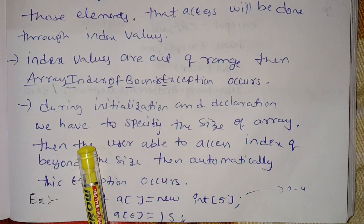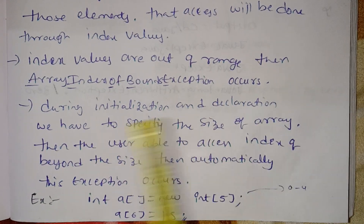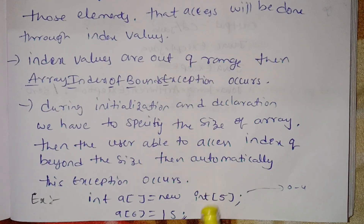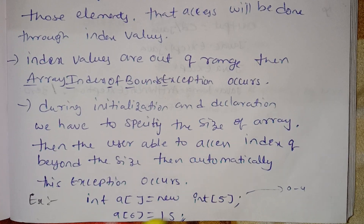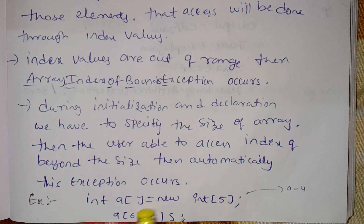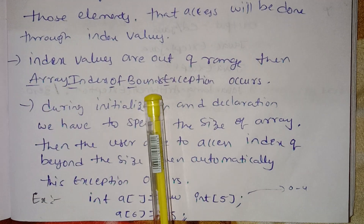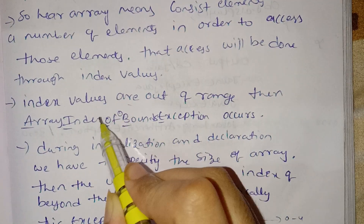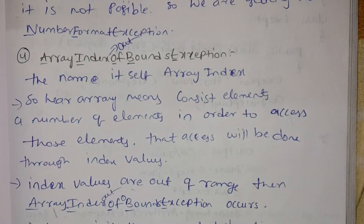The ArrayIndexOutOfBoundsException occurs when the user tries to access an index beyond the size of the array. For example, if the array size is 5, valid indexes are 0 to 4. If we try to access index 6 or 7, the exception is raised — array index out of bounds. So if we add 6, the value 6 is out of bounds, and we must handle the ArrayIndexOutOfBoundsException.